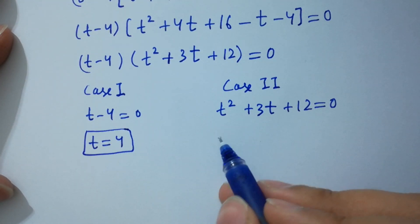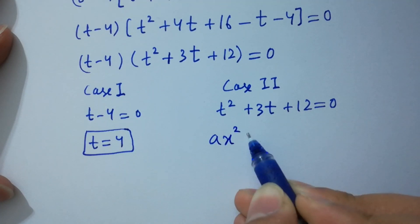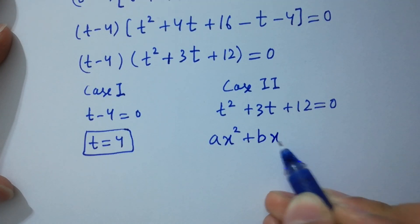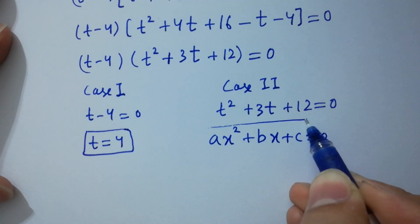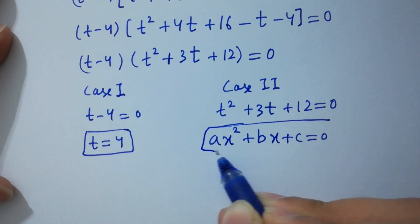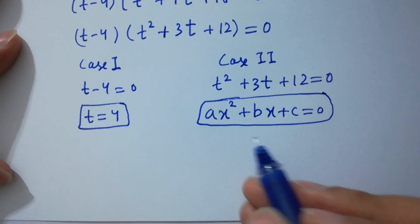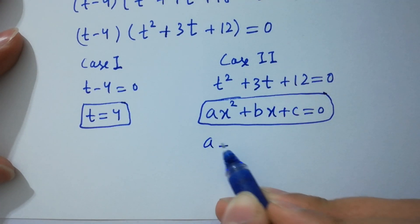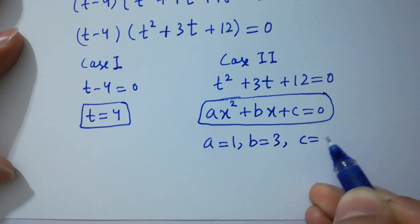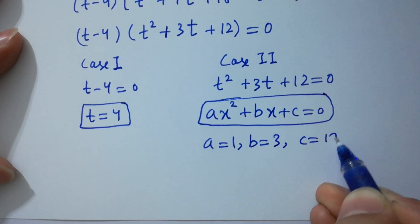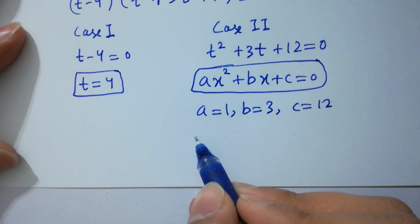For case two, t squared plus 3t plus 12 equals zero is a quadratic equation of the form ax squared plus bx plus c equals zero. By comparing: a equals 1, b equals 3, c equals 12. Applying the quadratic formula: t equals minus b plus or minus...